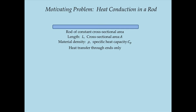For boundary conditions, the left-hand side of the rod is immersed in a medium with a constant temperature referred to as T-high — say, boiling water. The right-hand side is immersed in another medium with a constant low temperature referred to as T-low. I'd like to explore how to model and simulate the heat transfer through this rod over time. In steady state there will be a relatively simple solution, but I want to explore a dynamic solution using the tools of system dynamics.